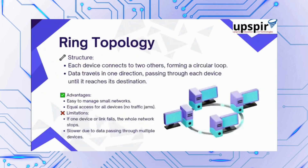Then there was ring topology, where the main bus was formed into a ring. The limitations were still the same — if any device or link fails, the whole network fails. It was also slower because data had to pass through multiple devices. This topology was not very popular and was soon discontinued.